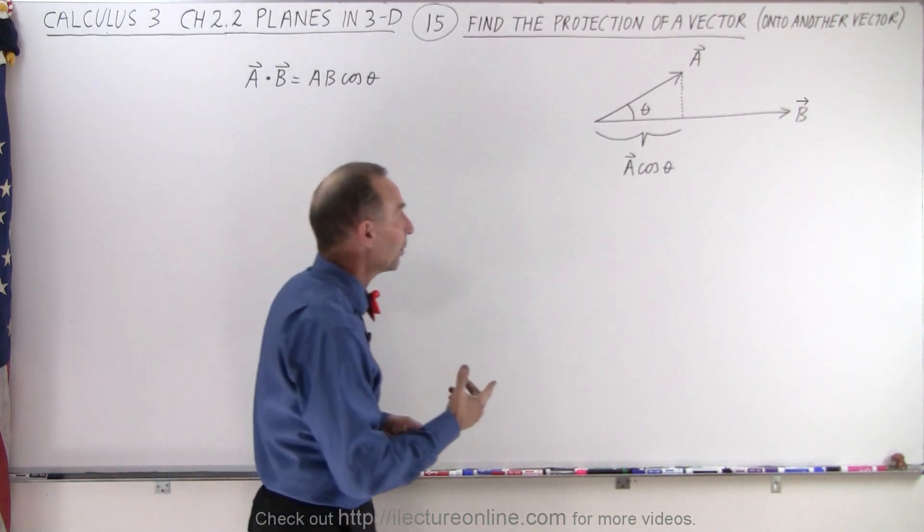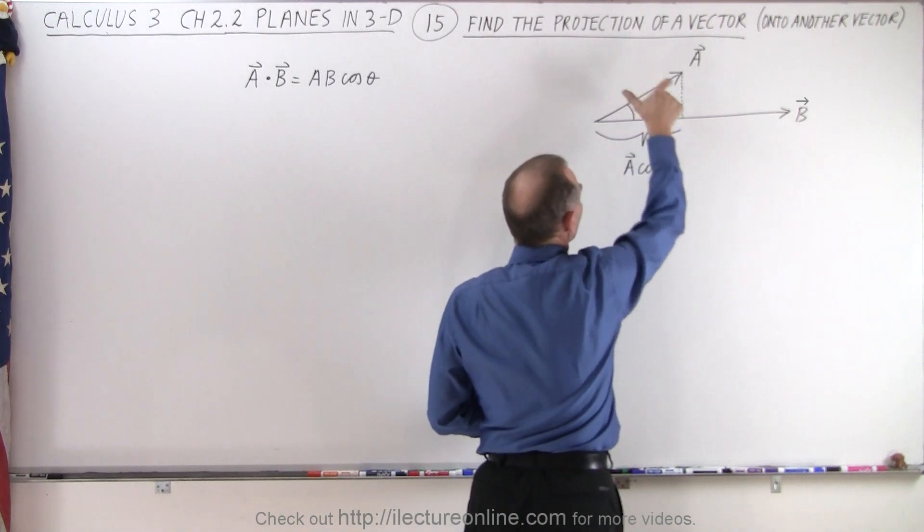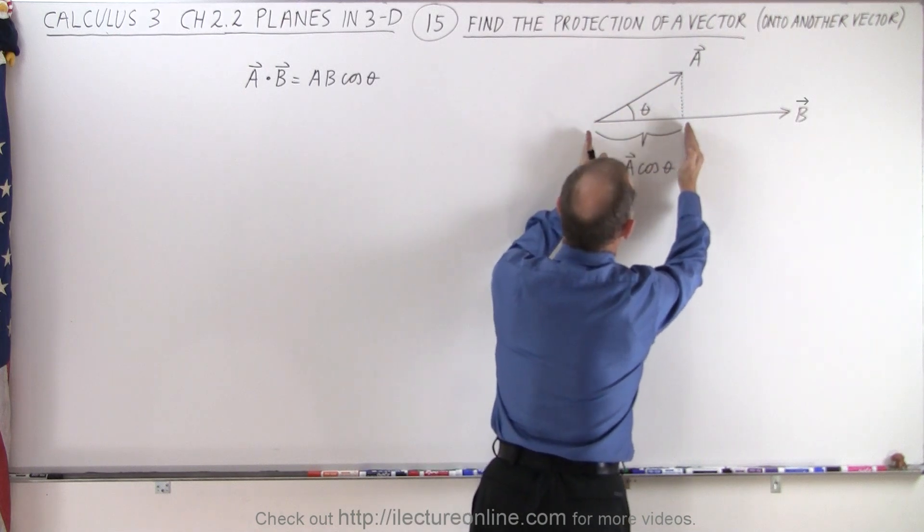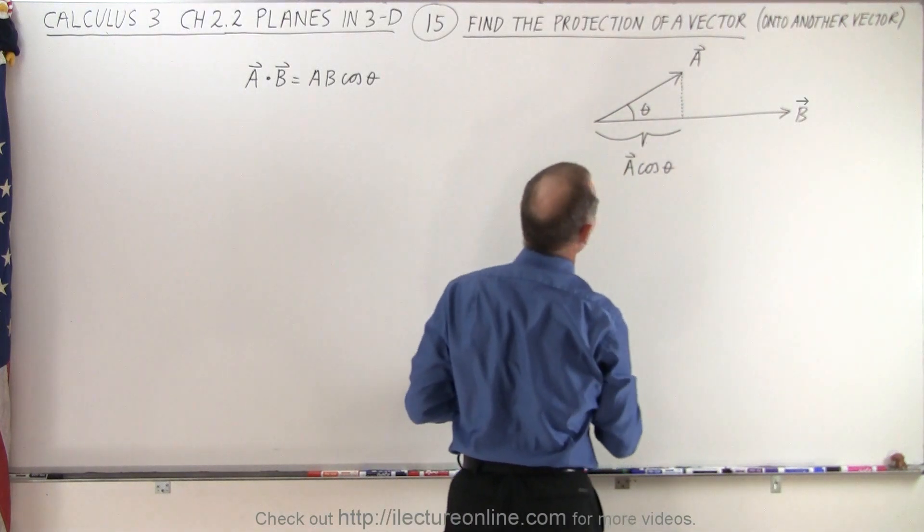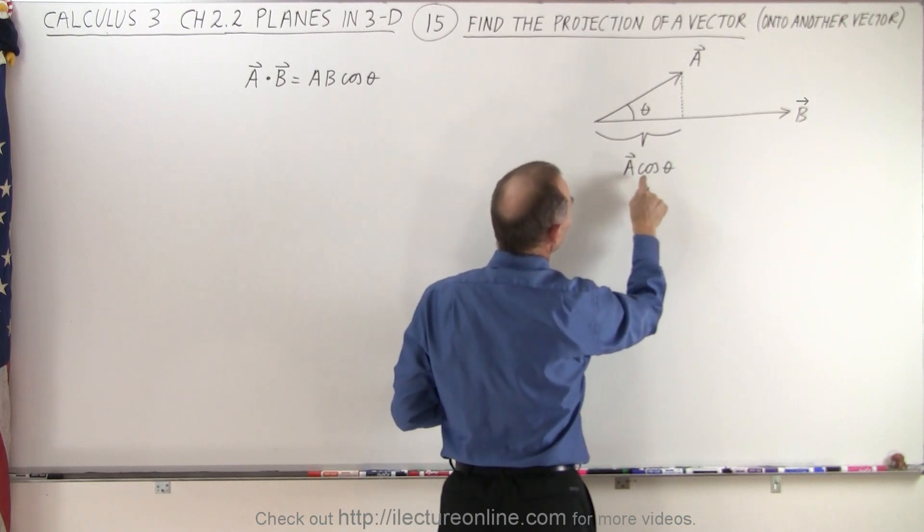So let's say, for example, that we're going to project the vector A onto the vector B, and that's right here, that's this distance right here, so we call that A times the cosine of theta.